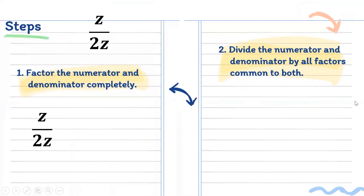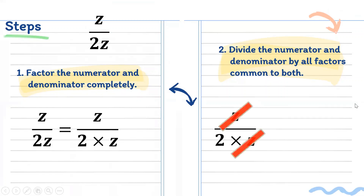Next: z all over 2z. Factor the numerator and denominator: z over 2 times z. The common factor is z, so we cancel it, leaving 1 half. So 1 half is the simplified term for z all over 2z.